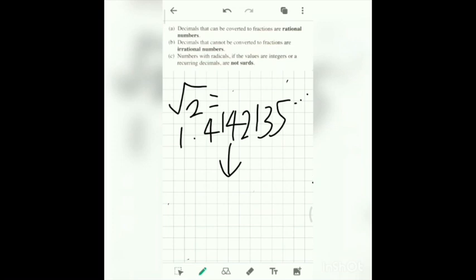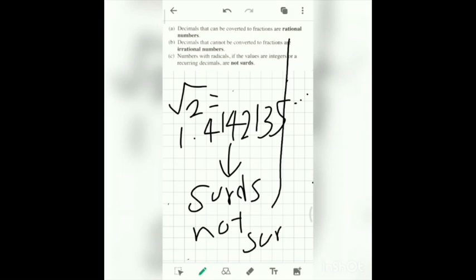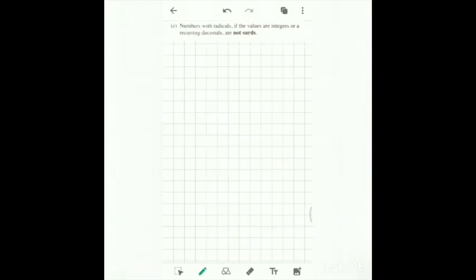The question is irrational numbers is surds and rational numbers is not surds. The number with radicals, if the values are integers or recurring decimals, are not surds. So surds are not recurring.